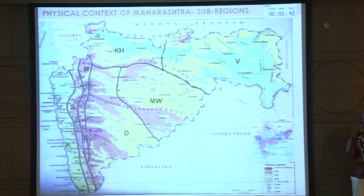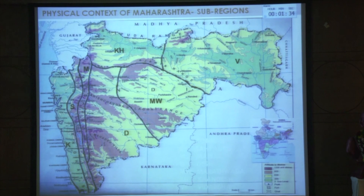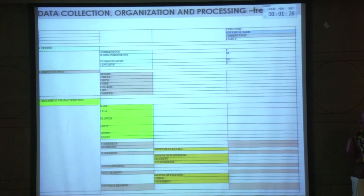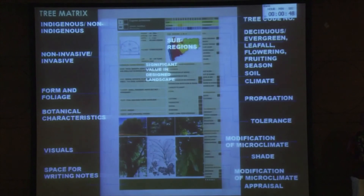Tree species were looked at from the basic geomorphological regions of Maharashtra: Konkan, Sahyadri, Mawar, Marathwada, Khandesh, and Vidarbha. Data was collected from around 100 to 150 sources — books, net, and other references — organized and processed into an Excel matrix. You can click on any header and sort the information; for example, filtering for evergreen species growing in Konkan gives you a specific list instantly. This makes it very handy for a professional. The intention is to eventually put it on a CD or similar accessible format.